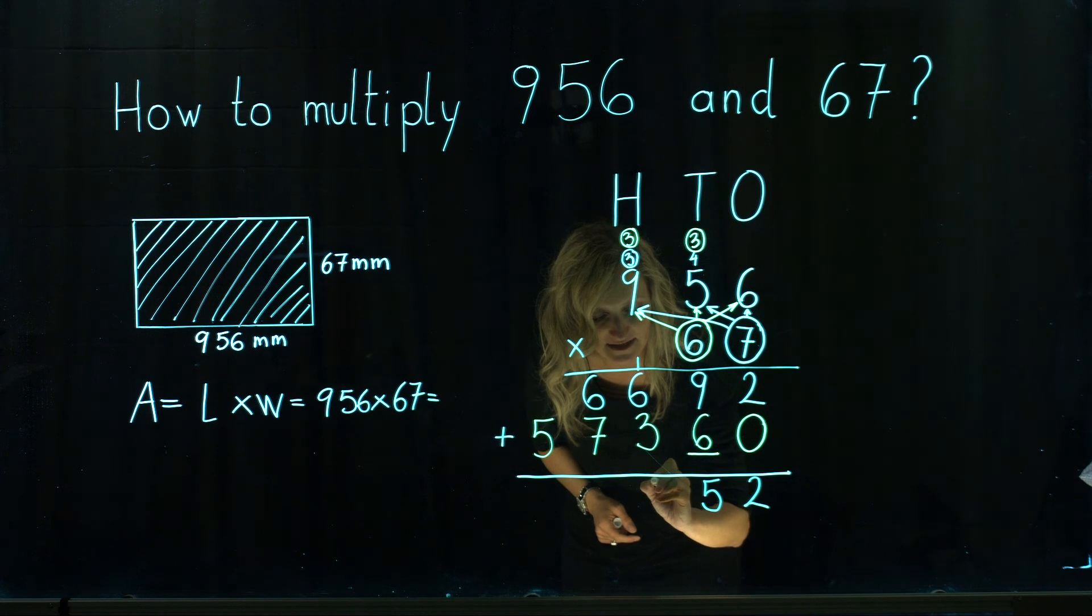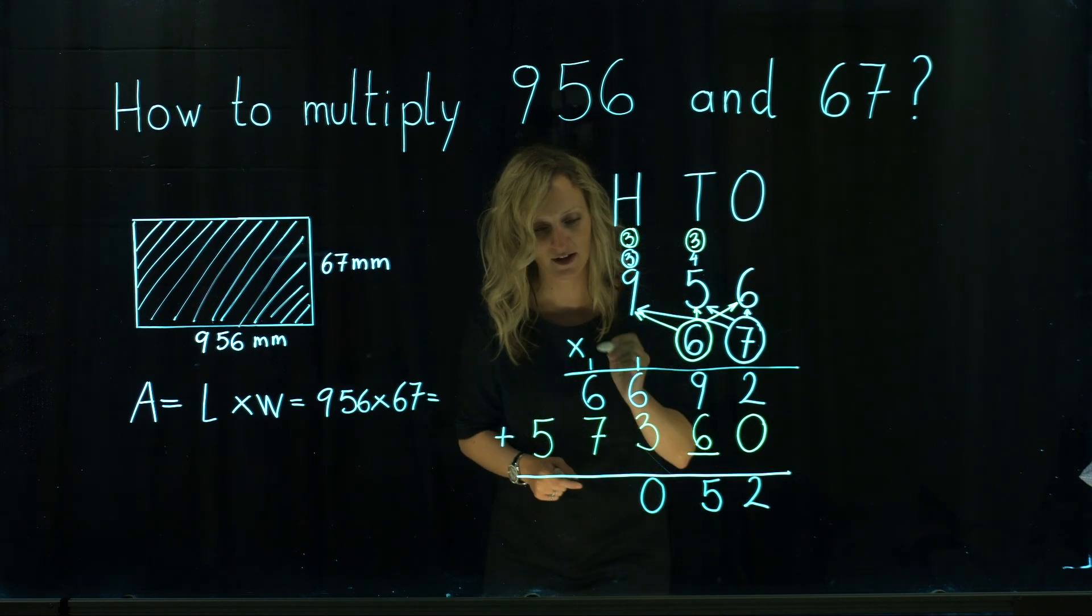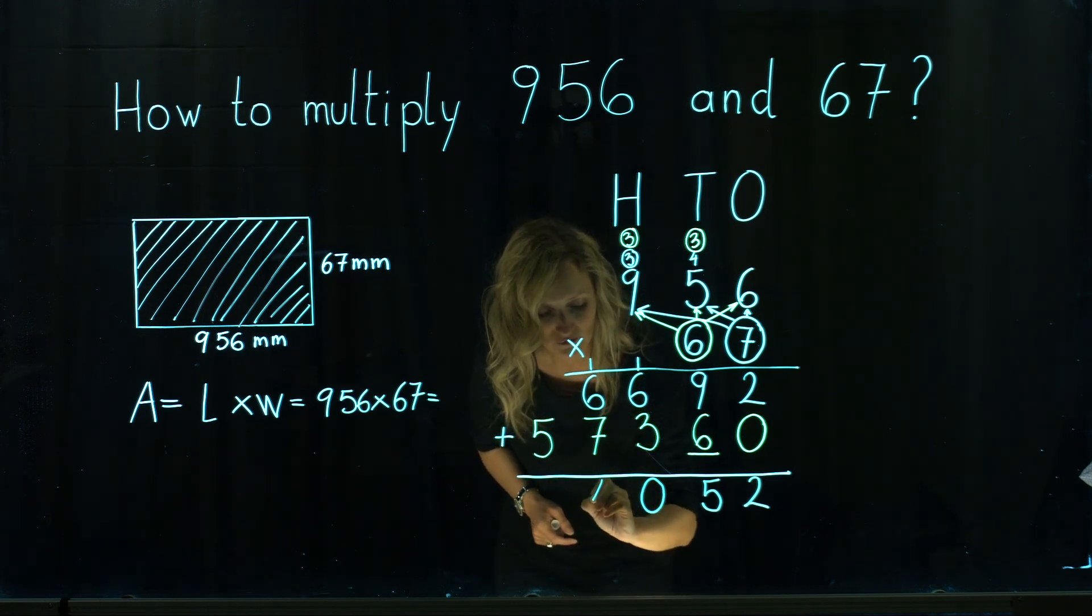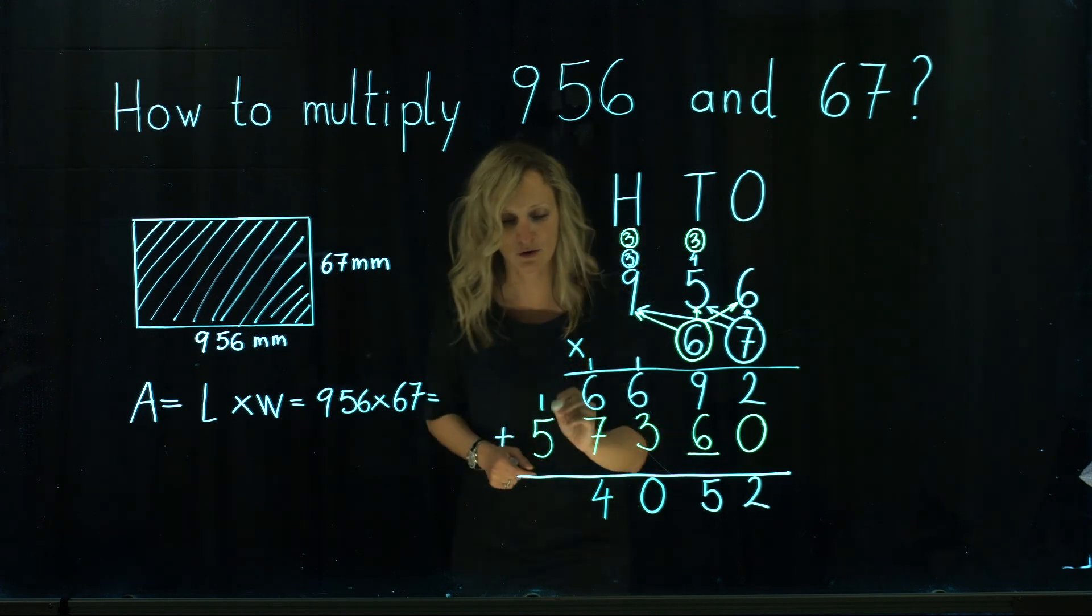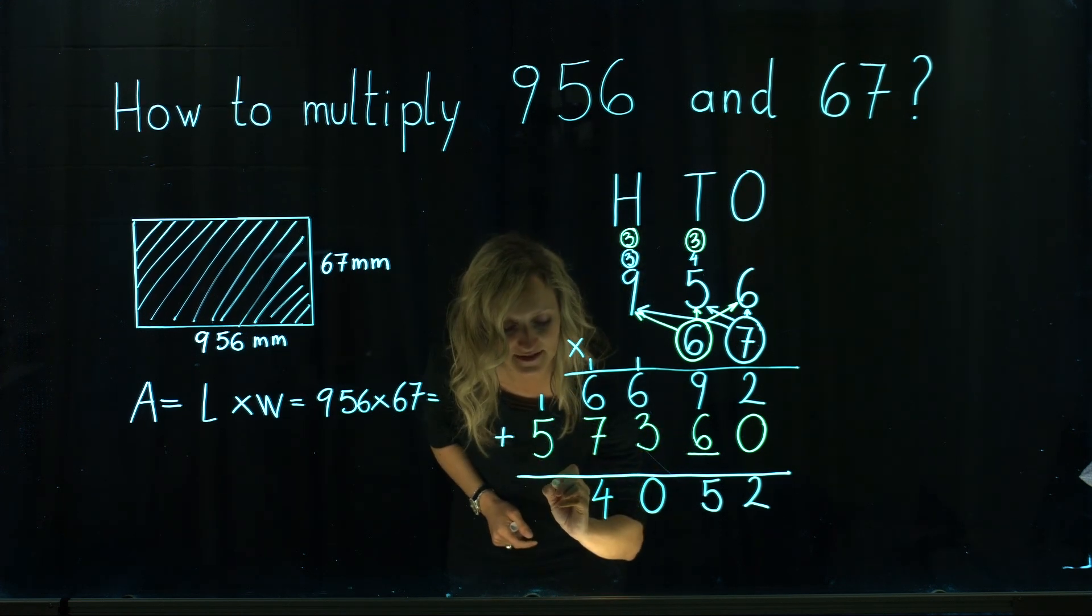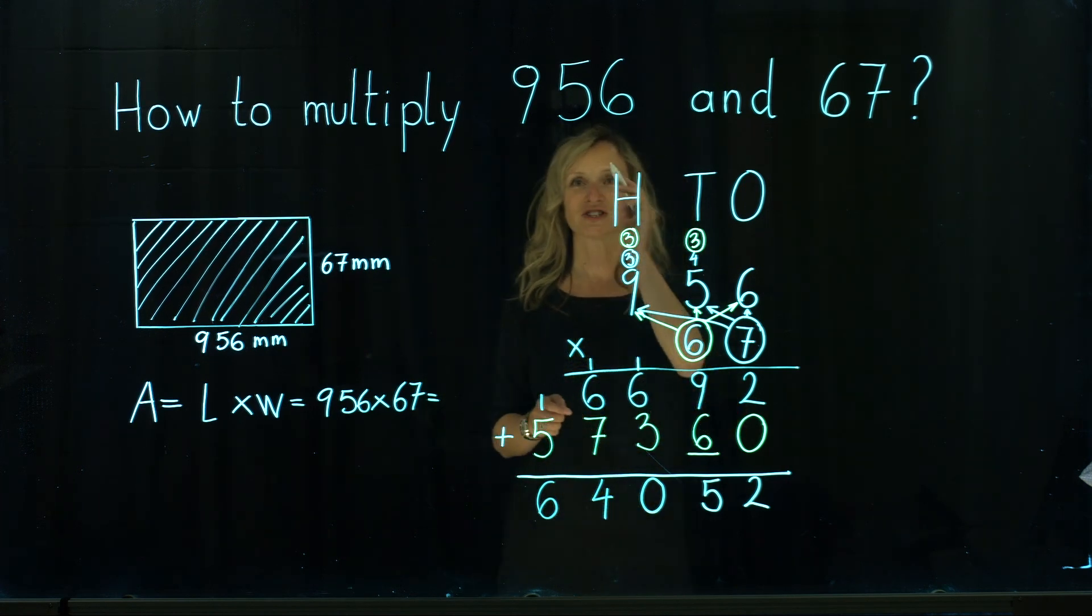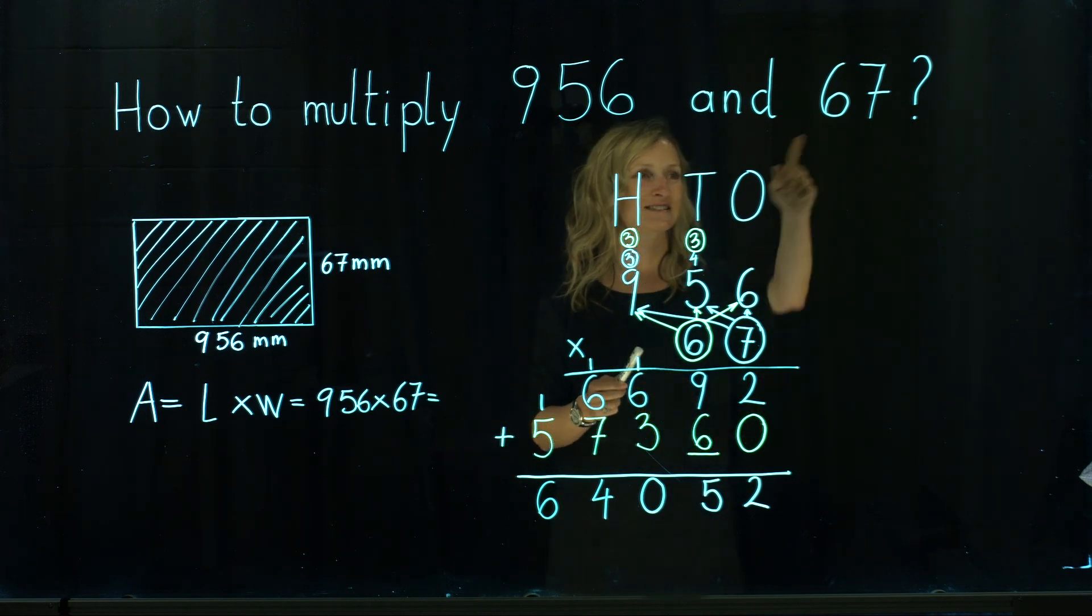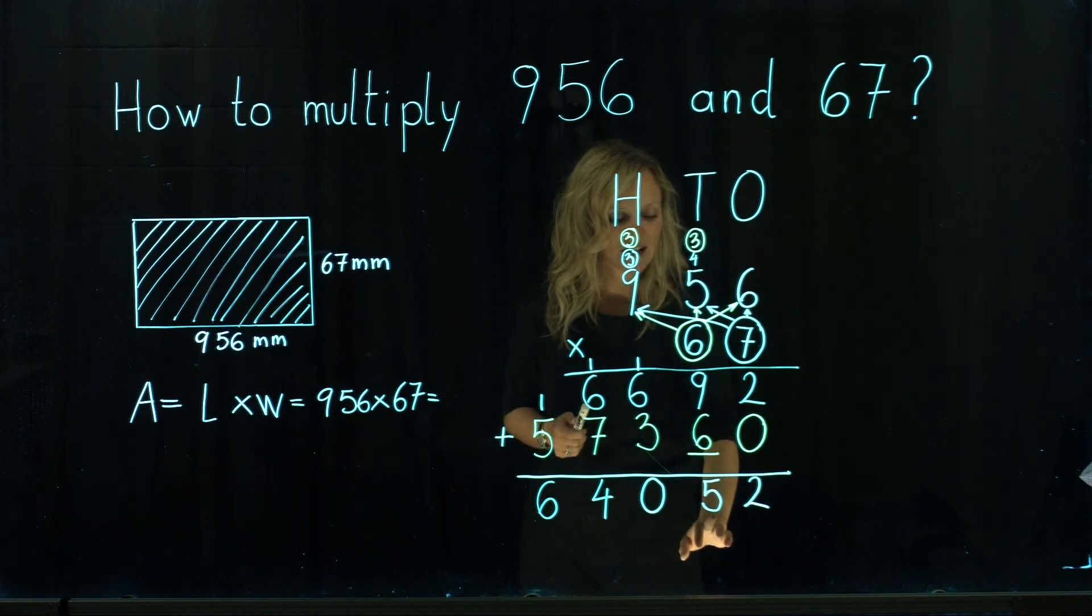1 plus 6 is 7. 1 plus 6 is 14. 4 down and 1 carry over. And 1 plus 5 is actually 6.